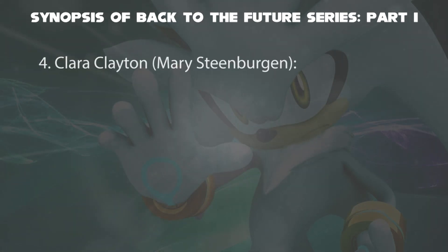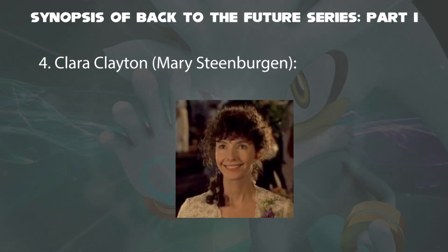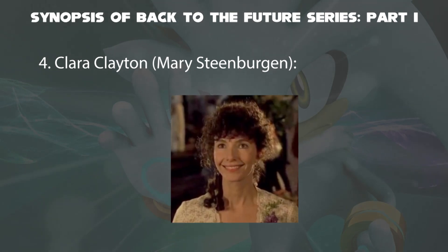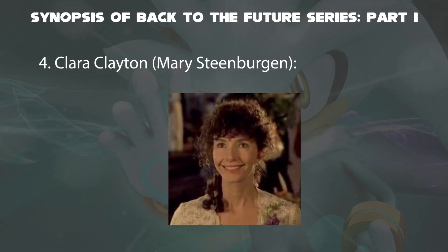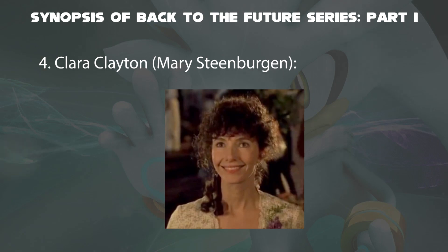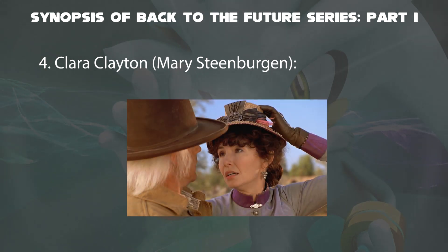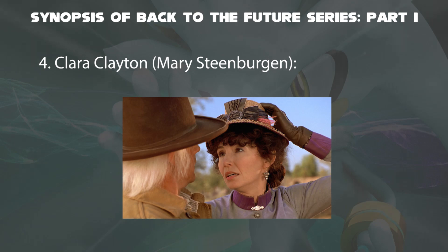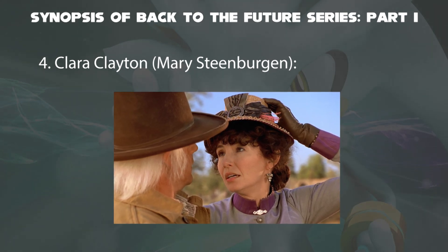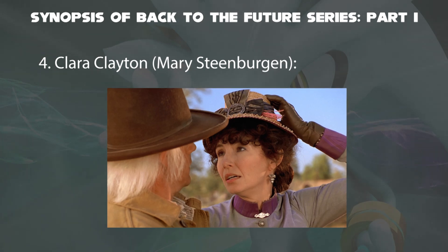The fourth main character is Clara Clayton, played by Mary Steenburgen. In Part 3, she was a schoolteacher living and working in the schoolhouse outside Hill Valley in 1885. She met Dr. Emmett Brown and Marty McFly by chance when she was about to fall over Shonash Ravine. Clara was a very intelligent woman. Like Doc, her favorite author was Jules Verne, and she was very interested in astronomy and science.